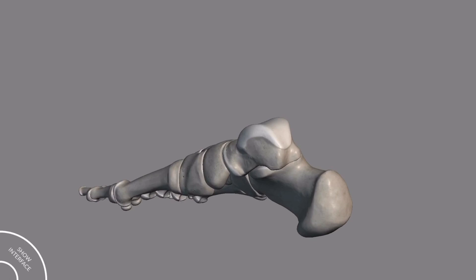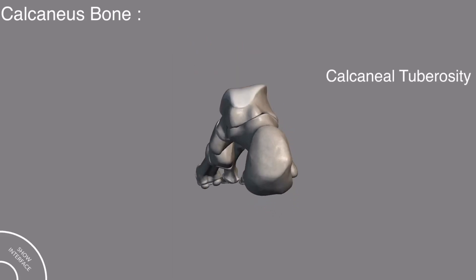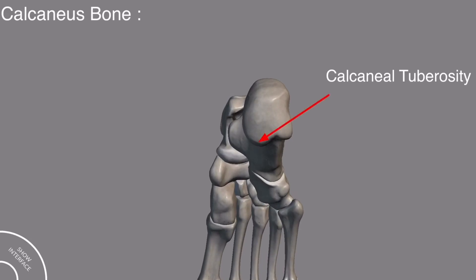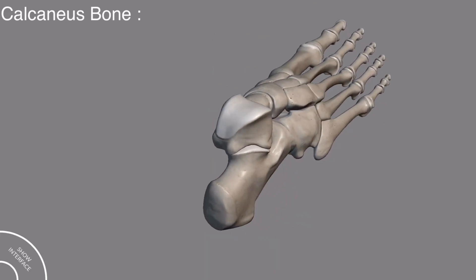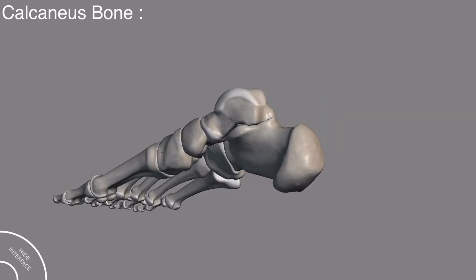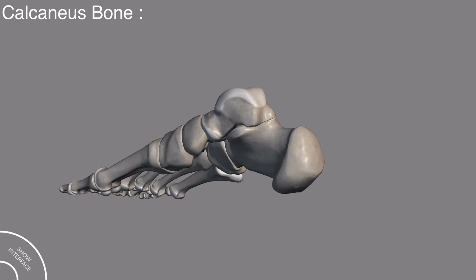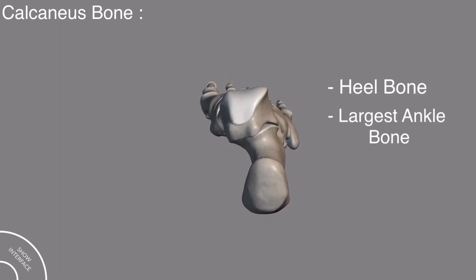Now let's come to the calcaneus bone. This is the calcaneal tuberosity. Below, this is the medial process of the calcaneal tuberosity, while this is the lateral process of the calcaneal tuberosity. This is the peroneal or fibular trochlea, and this is the sustentaculum tali. The calcaneus bone is also called the heel bone and it is the largest of the tarsal bones.